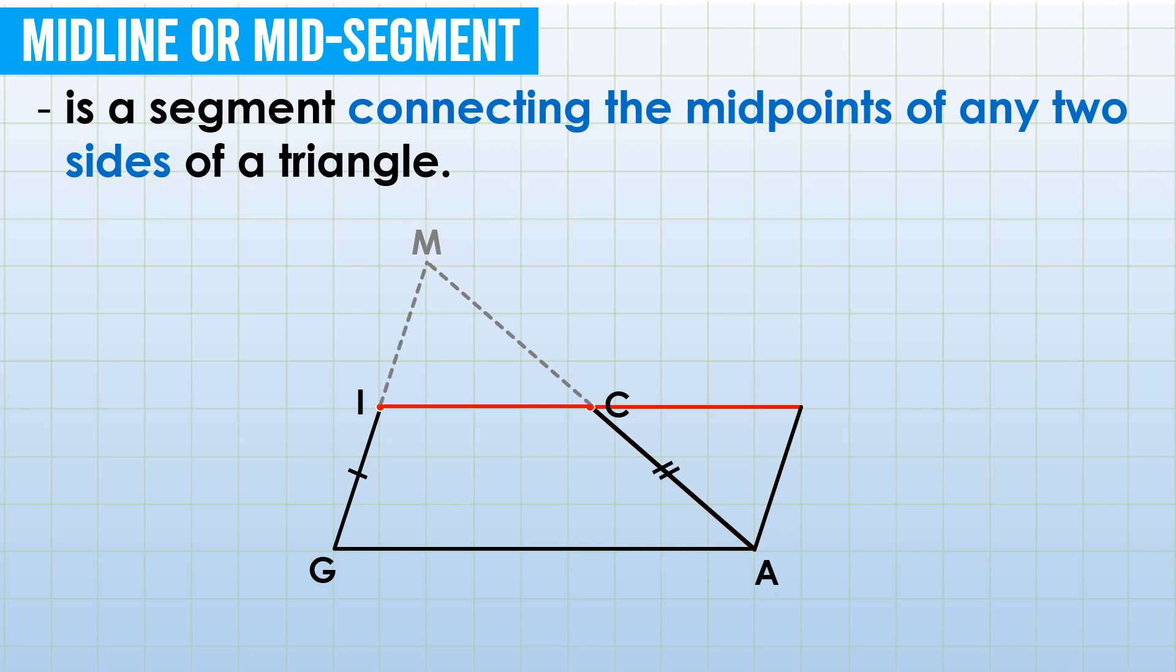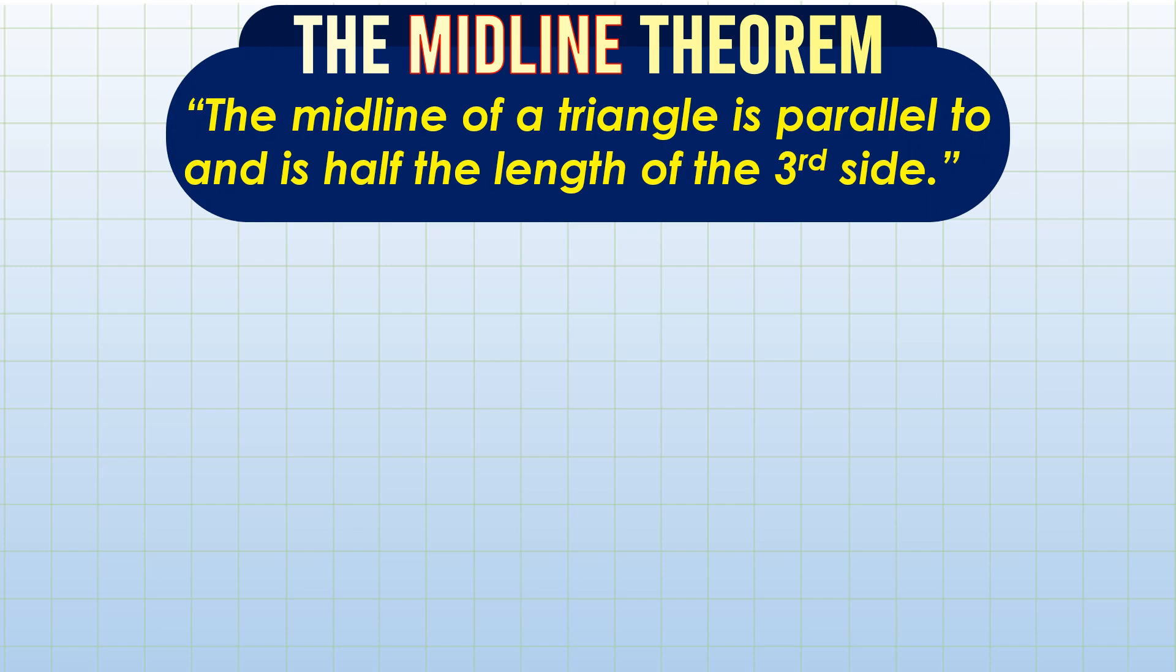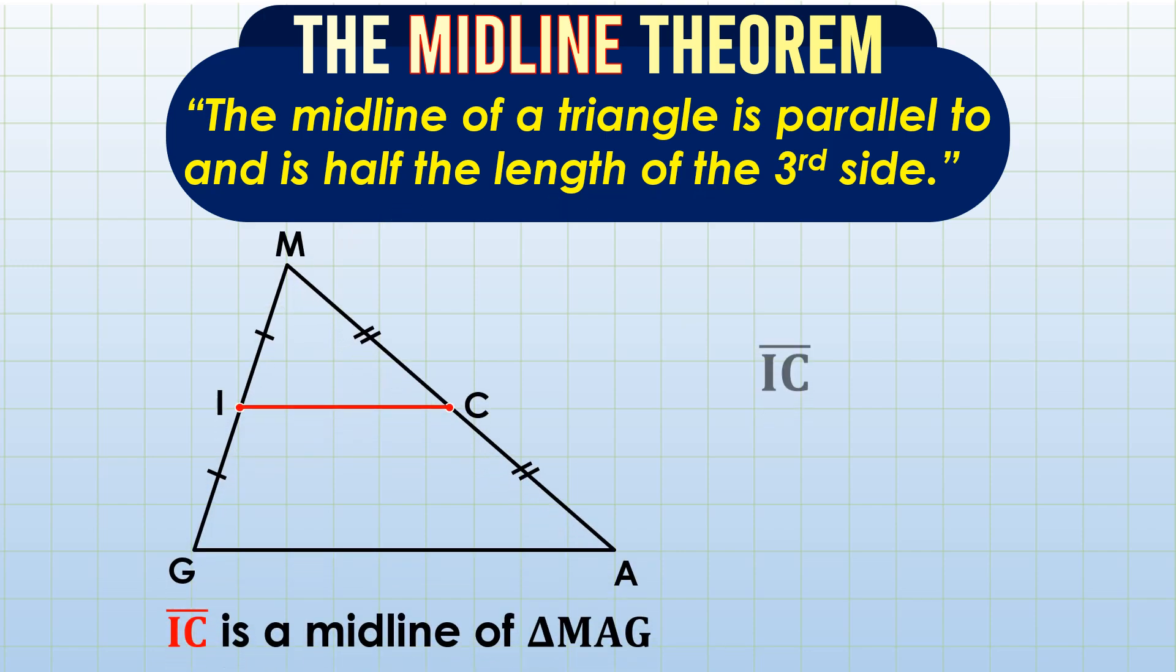Let me reveal the midline theorem, which states that the midline of a triangle is parallel to and is half the length of the third side. In notation, midline IC is parallel to side GA, the third side of our triangle. Another, midline IC is one-half the measure of the third side of the triangle.